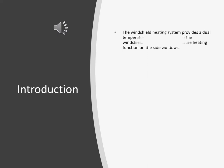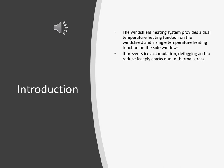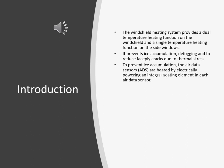The windscreen system provides a dual temperature heating function on the main windshield and a single temperature heating function on the side windows. This prevents ice accumulation, provides a defogging effect, and reduces face ply cracks due to thermal stress. To prevent ice accumulation, the air data sensors are all heated electrically, powering an integral heating element in each data sensor, and there is certain logic as to when they are switched on.